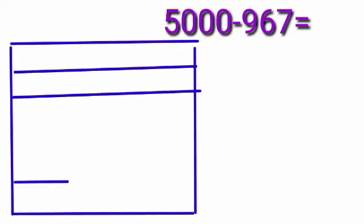Next example: 5000 minus 967. Let's arrange vertically.